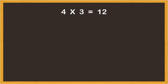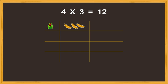There is another way to calculate four times three. Gul needs three bananas for one friend — this is one times three. He needs three more bananas for his second friend — we call this two times three.